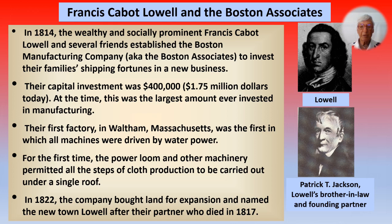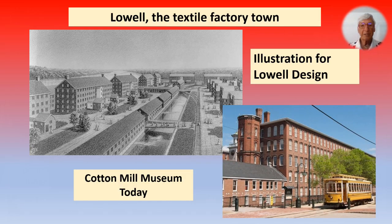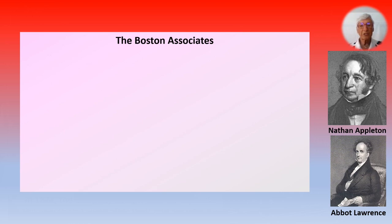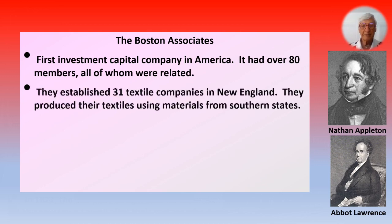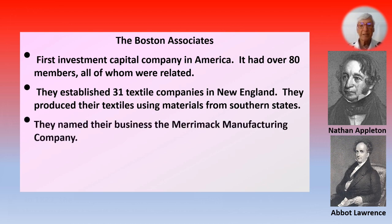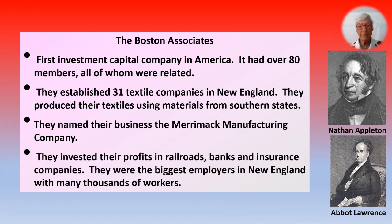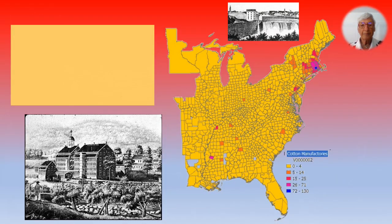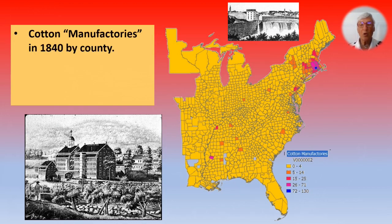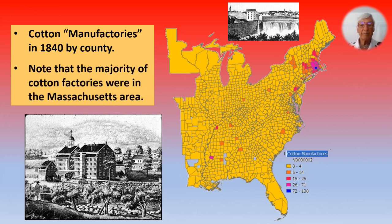In 1822, the company bought land for expansion and named the new town Lowell after their partner, who had died in 1817. The Boston Associates — the first investment company in America — had over 80 members, all of whom were related. They established 31 textile companies in New England and produced their textiles using materials from the Southern states. They named their business the Merrimack Manufacturing Company, invested profits in railroads, banks, and insurance companies, and were the biggest employers in New England with many thousands of workers. By 1850, the Boston Associates controlled 20% of cotton production in the United States, with the cotton manufacturing concentrated in the northeastern United States, particularly in Massachusetts.